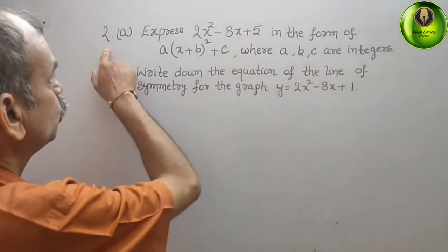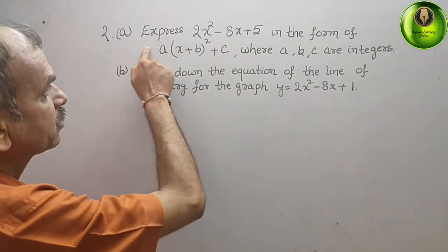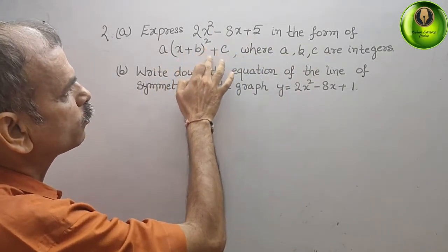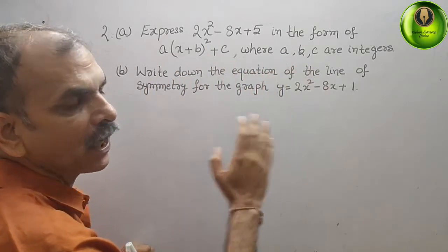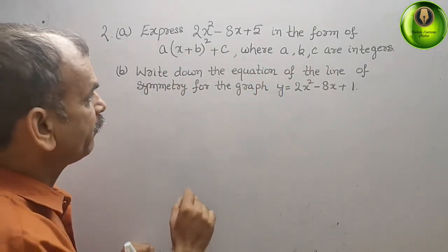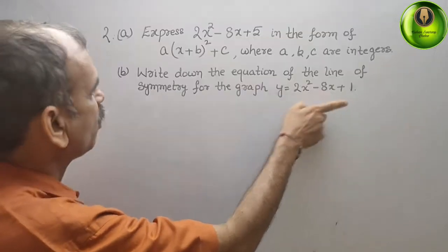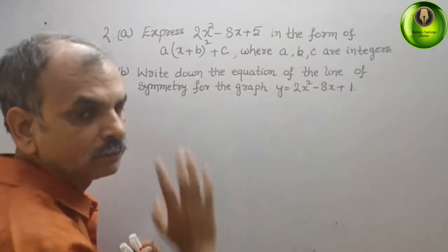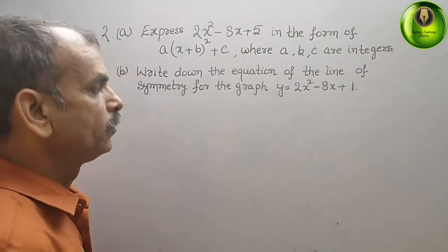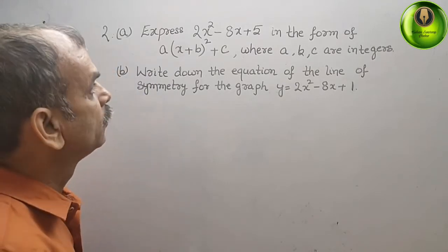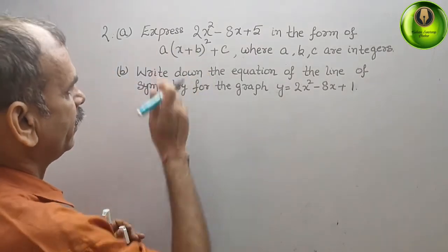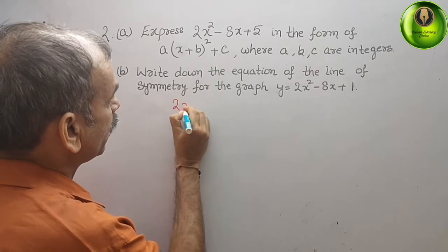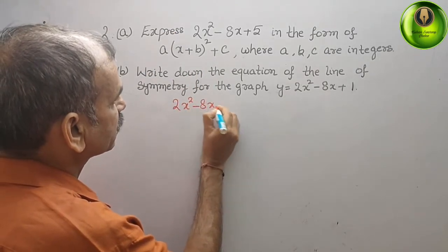Question 2a: express 2x² minus 8x plus 5 in the form a(x+b)² plus c, where a, b, c are integers. Part b asks you to write down the equation of the line of symmetry for the graph y equals 2x² minus 8x plus 1. So in the first equation they have given you 2x² minus 8x plus 5.